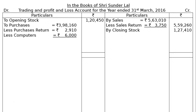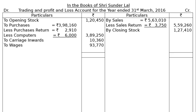After deducting computers under adjustment D, the final column for purchases comes to Rs. 3,89,250. Then carriage inwards is Rs. 10,360 and wages is Rs. 93,770. Our trading account posting is complete. The total from the credit side is Rs. 6,86,670.